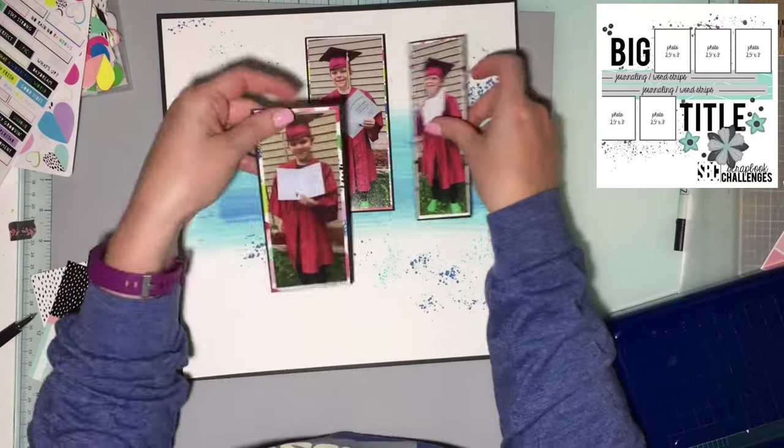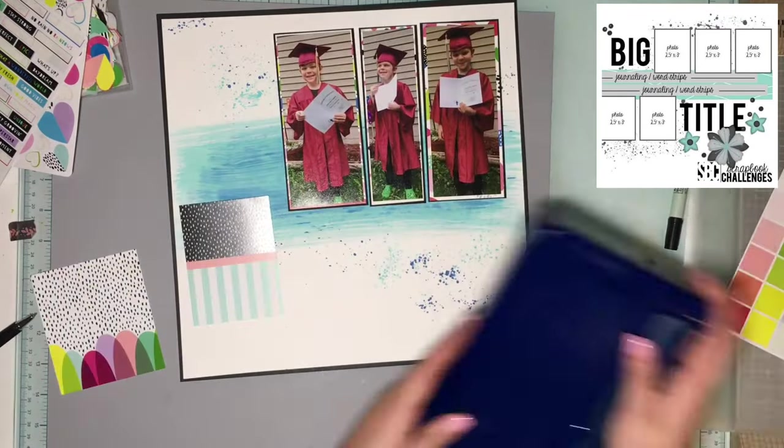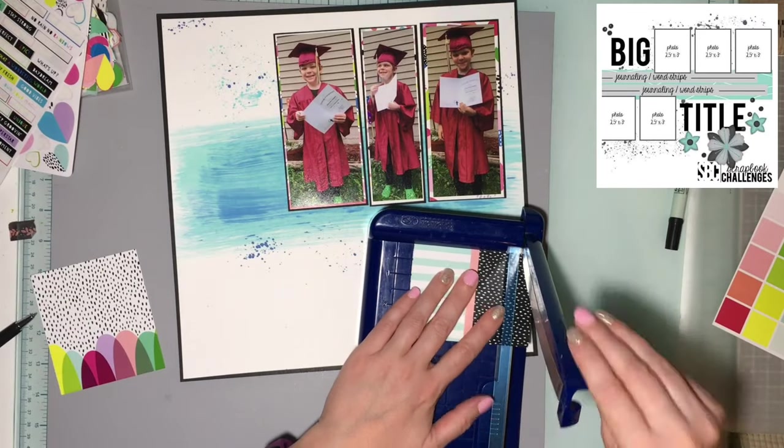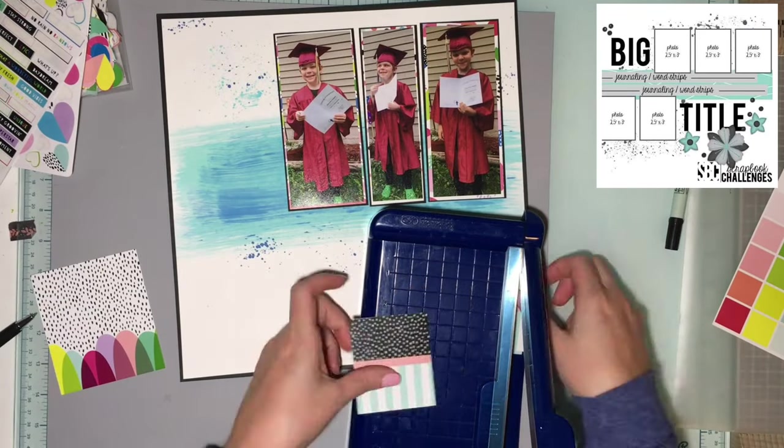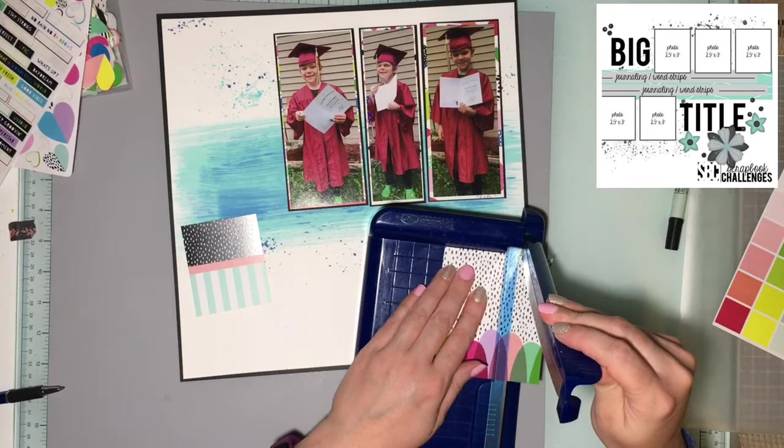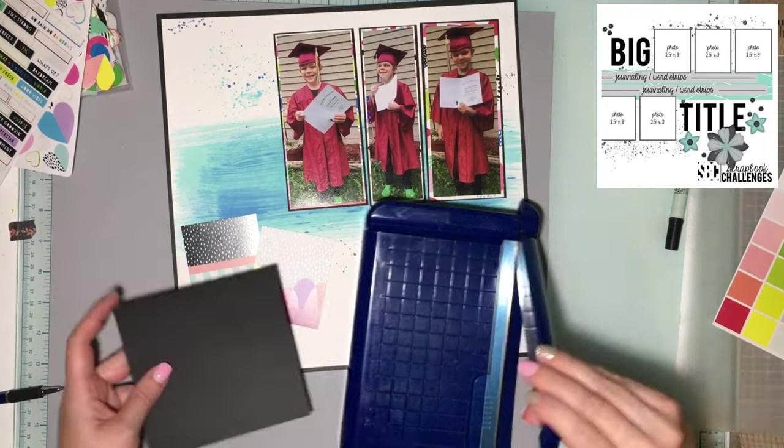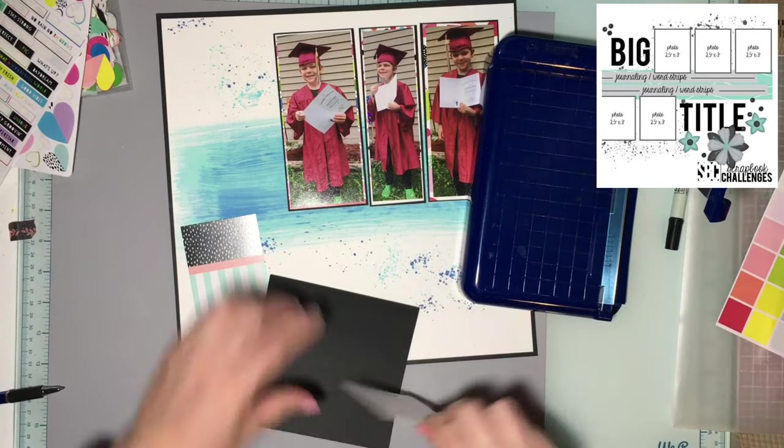I'm going to take two of the 3x4 cards that I like and cut them down. I think I cut them both down to 2.5x3, and I'm going to mat them on black. They're just going to be little placeholders.